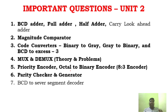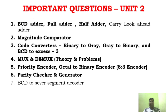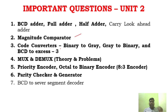For Unit 2, I have given more than 7 concepts. The key concepts include decoder, ALU, half adder, full adder, carry look-ahead adder, code converters, and multiplexer/demultiplexer. These are periodically repeated questions in the exam, so give them importance — they are sure-shot questions.